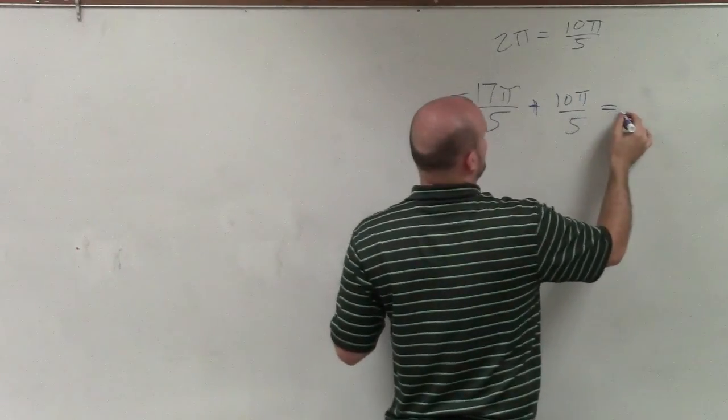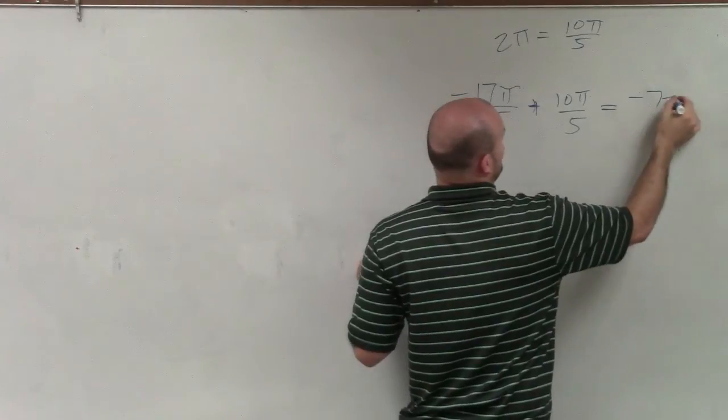Therefore, when I get that, add those together, I get a negative 7 pi over 5.